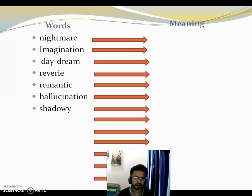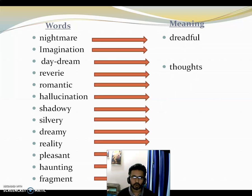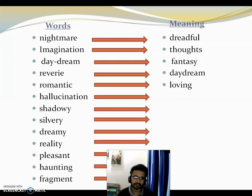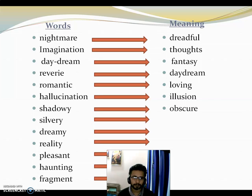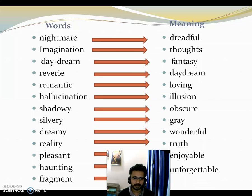Let us know the meaning of some words. Nightmare means dreadful, that is horrible — something very frightening. Imagination means thought. Daydream means fantasy, that is something unreal. Reverie means trading daydream fantasy. Romantic means lovely, loving, very dear. Hallucination means illusion. Shadowy means obscure, not clear. Silvery means gray, colorless. Dreamy means wonderful. Reality means truth or fact. Pleasant means enjoyable, and haunting means unforgettable — something we cannot forget.